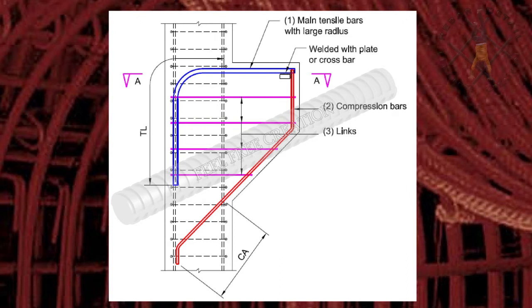If main bar diameter is greater than 16 millimeters, then the arrangement can be suggested as shown here. It contains main tensile bars with large radius, like mandrel radius shape code 12, and is welded with plate or cross bar.